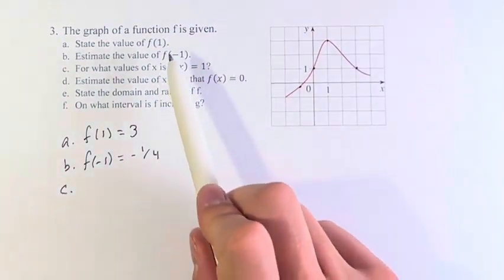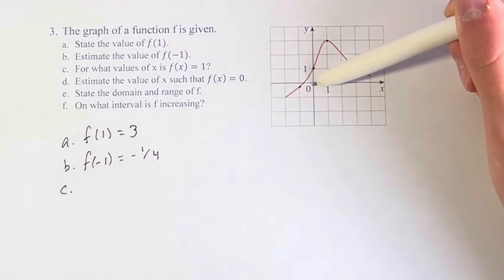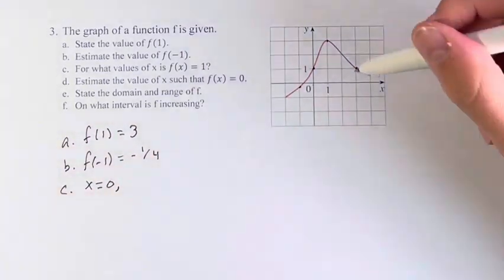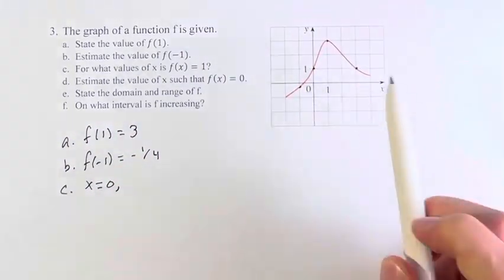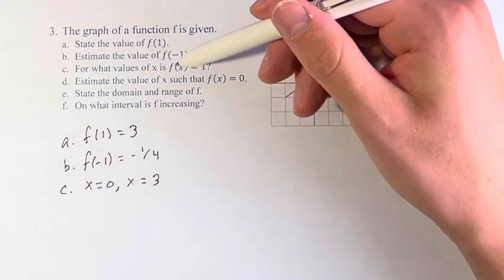We're asked for the x values of these points. For this point right here, the x value, if we go down, is 0. And for this point here, it's 1, 2, 3. So x equals 0 and x equals 3 when the function equals 1.